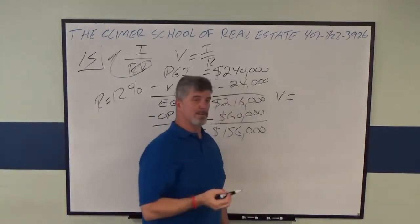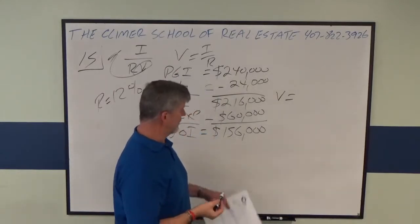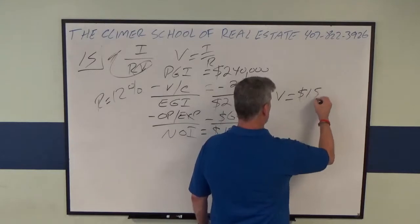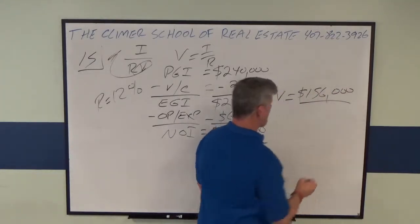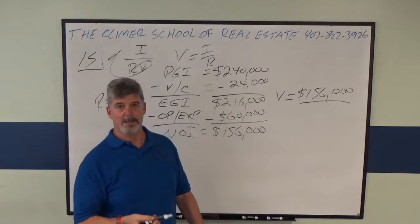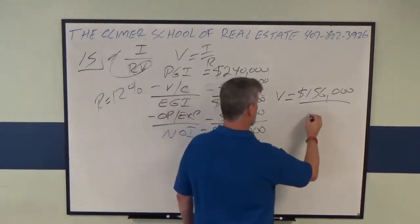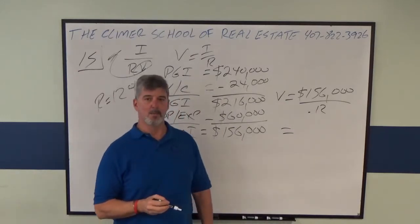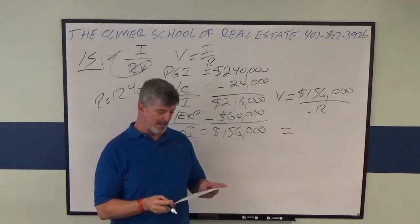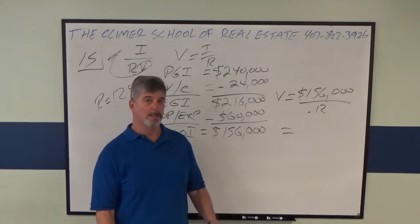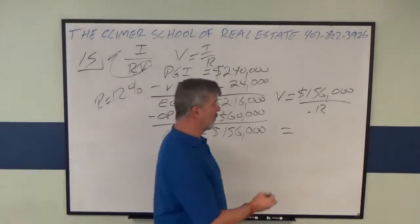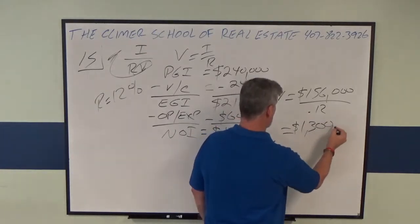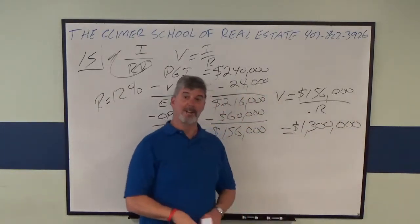V equals what's NOI? $156,000. We just figured that out. What is our cap rate? 12%. That's in the problem. So now the value is $156,000 divided by .12, which gives us a value of $1,300,000.